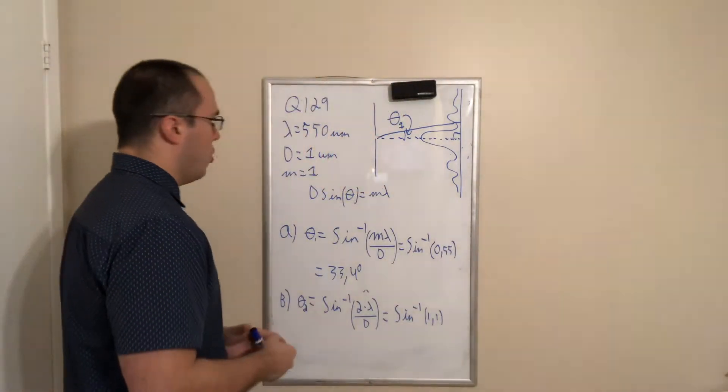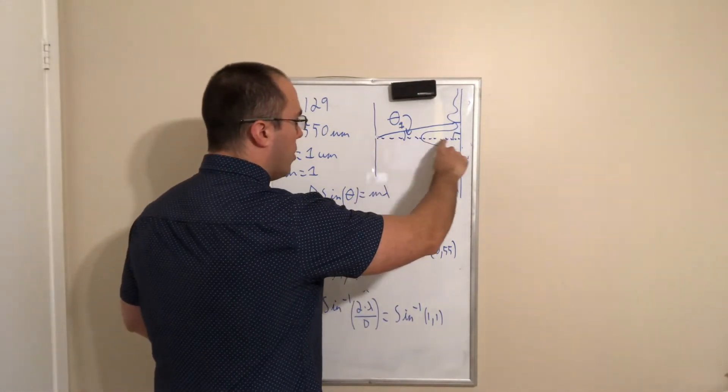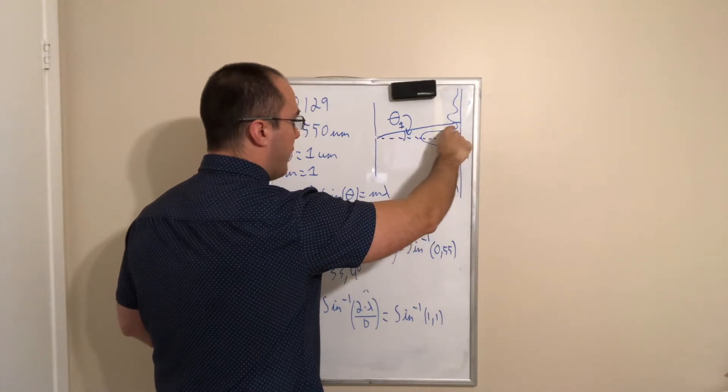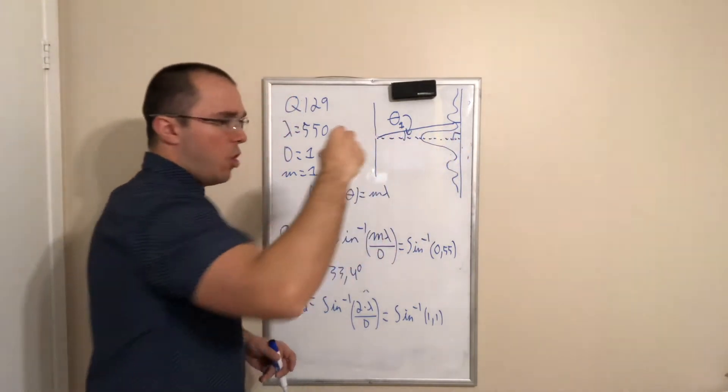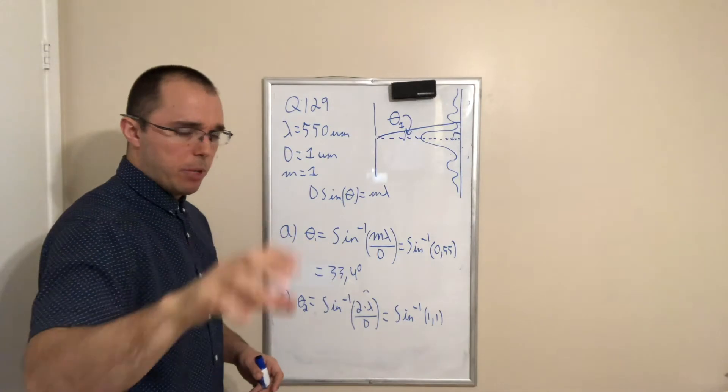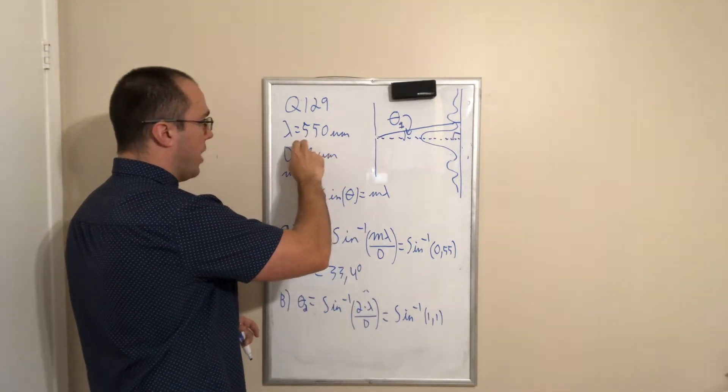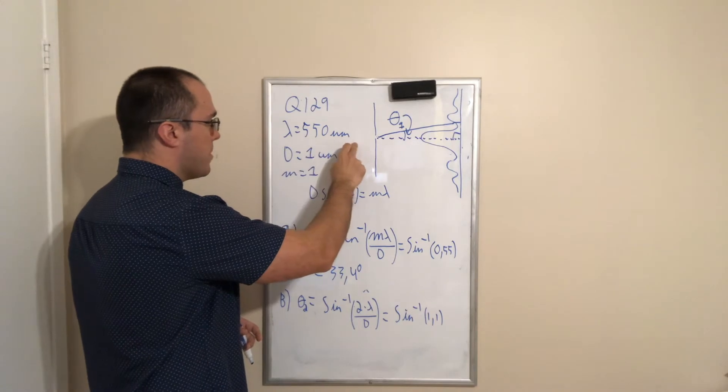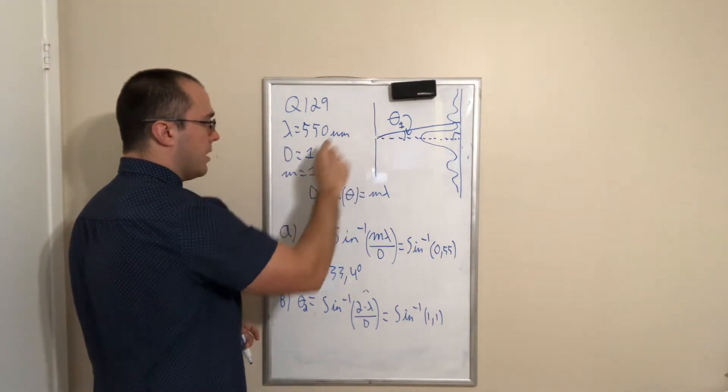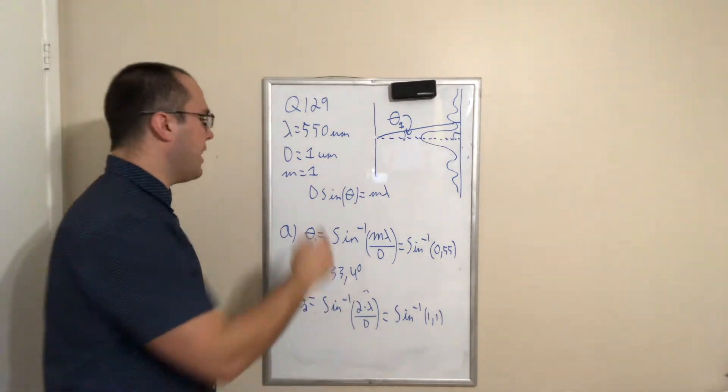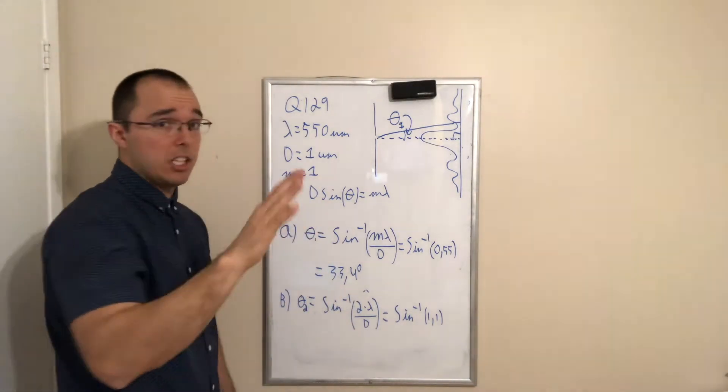So first, we are simply looking at the angle here between the central maximum and the first minimum. To solve this question, we will need the piece of information included in the text, which is that lambda is equal to 550 nanometers, the width of the slit is 1 micrometer, and we are looking for the first minimum, which means that m will be equal to 1, at least for part A.